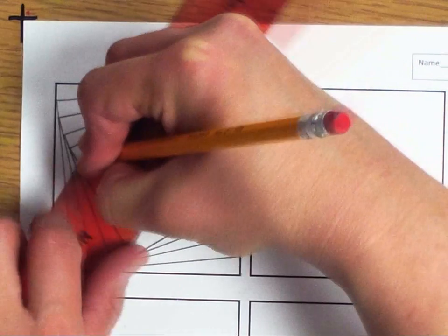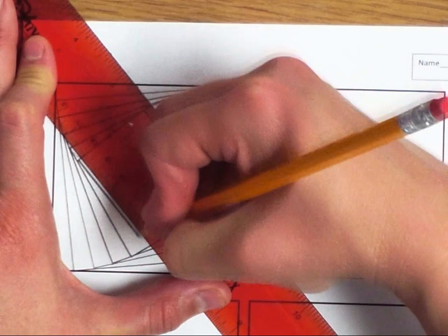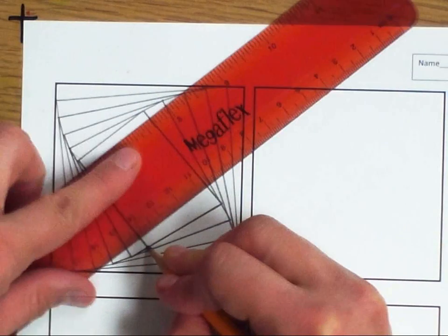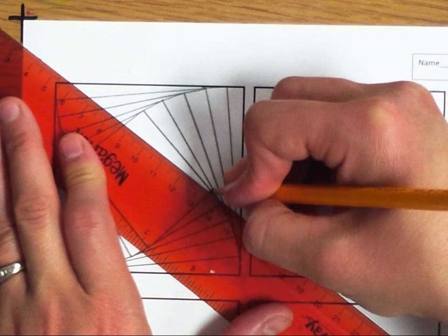As you can see, I keep my pencil down just because it makes it easier to know where it was at. And I just move my ruler around as I go.